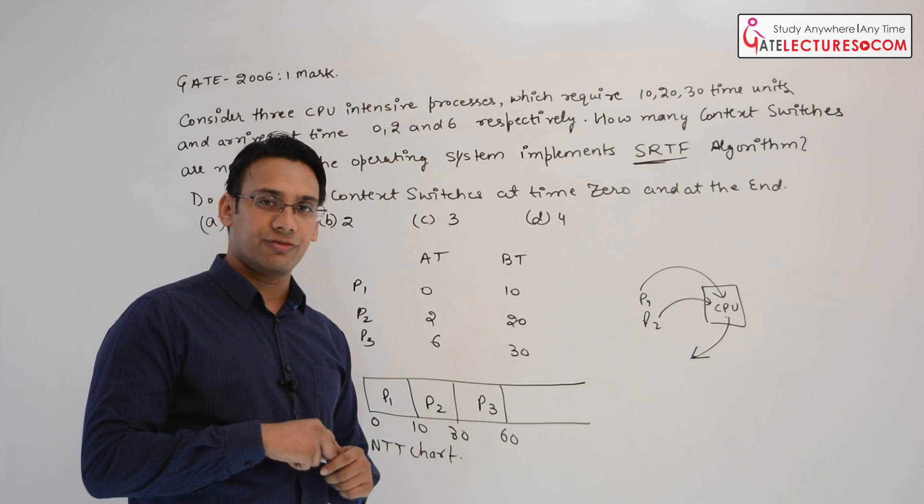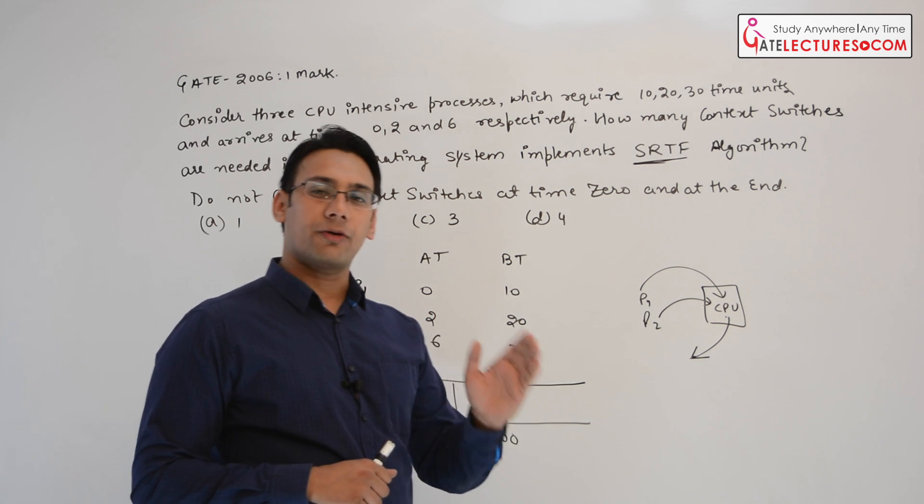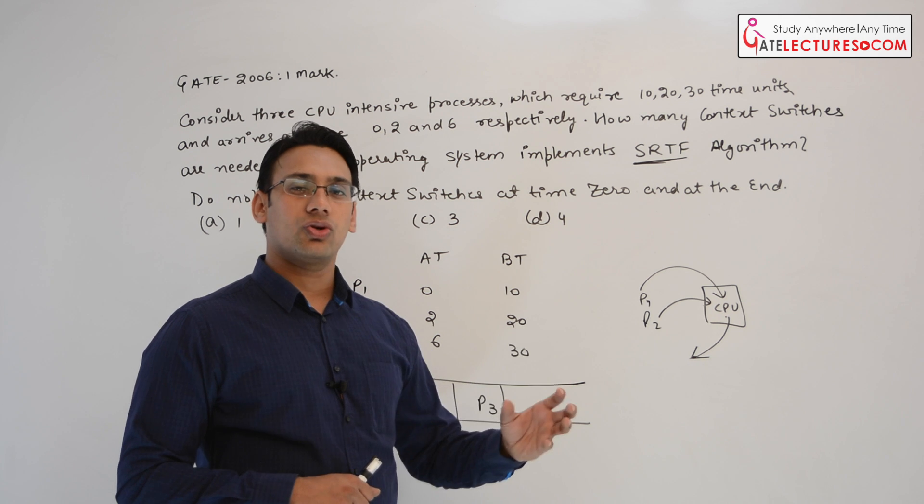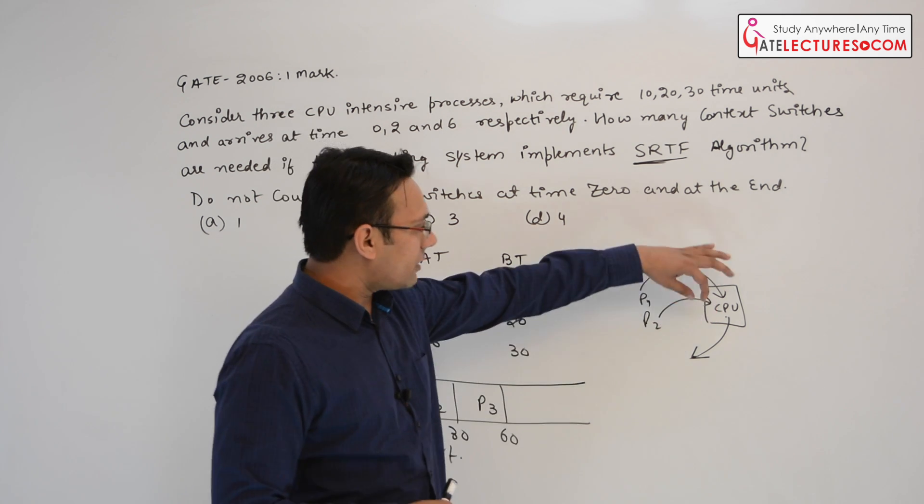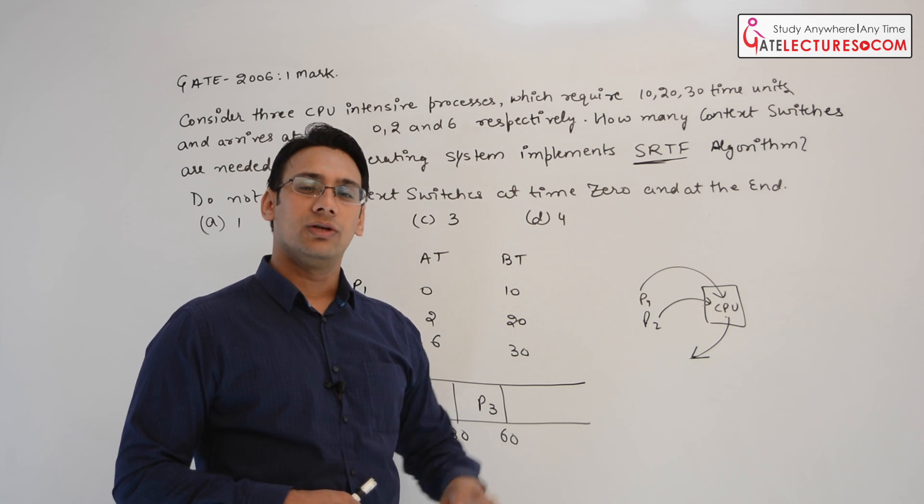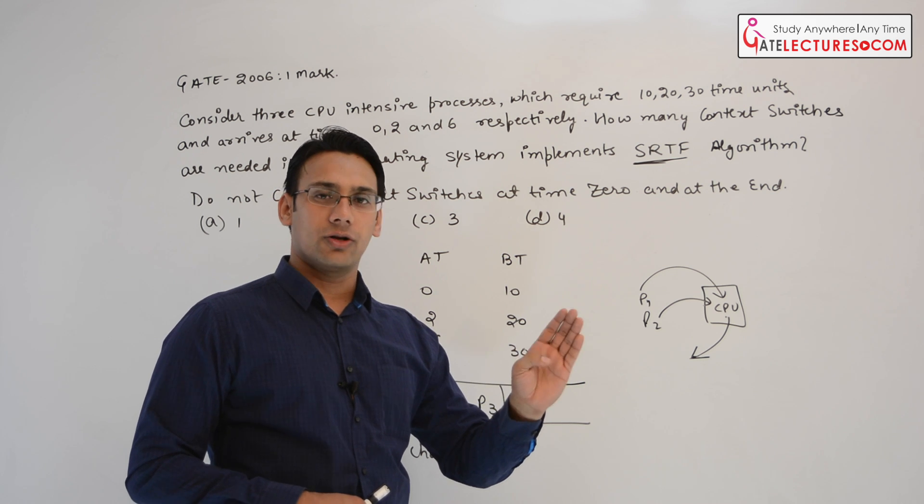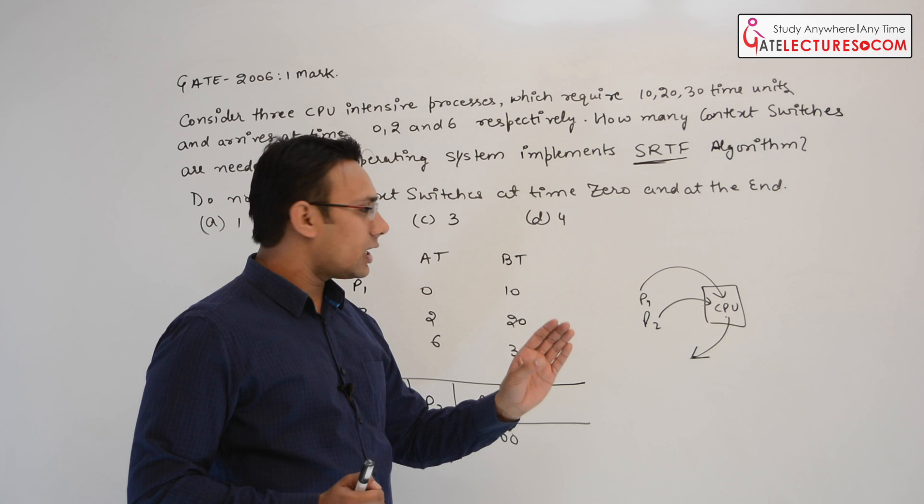There are two ways to define context switch. The first way is we have process control block. We have some process attributes. We store all these process attributes into the process control block. When one process is executing in the CPU then we are reading the process control block of that process. And this process control block is stored in the form of link list. We have already done this.